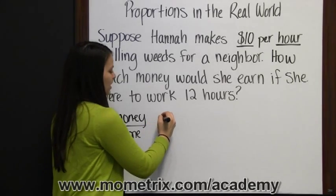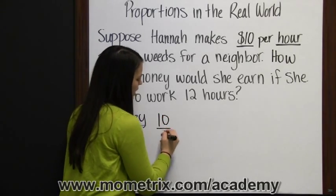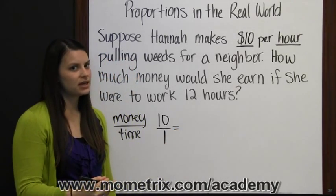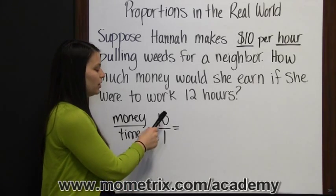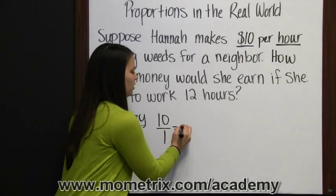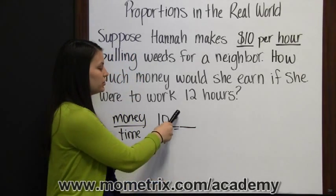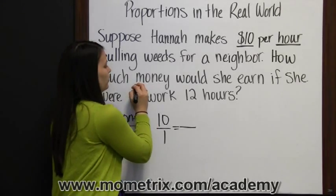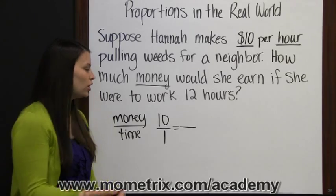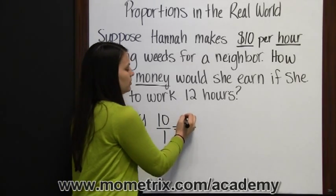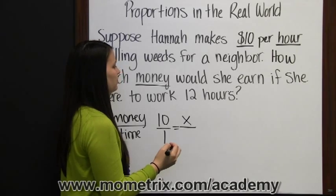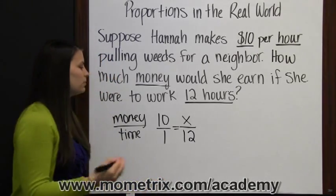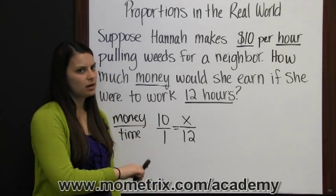We know that she makes $10 in one hour. As we set up our proportion, it's very important to be consistent. If our first ratio is dollars per hour, then our other ratio needs to also be set up as dollars per hour. Since the money is what we don't know — how much money would she earn? — we can put a variable divided by 12 hours. That's our time. With both ratios, we put our money divided by the time.